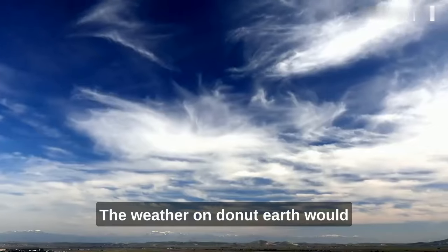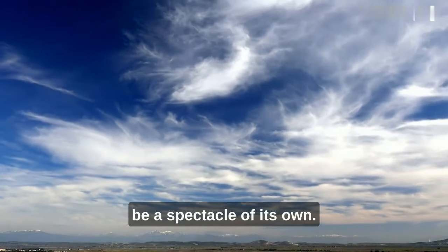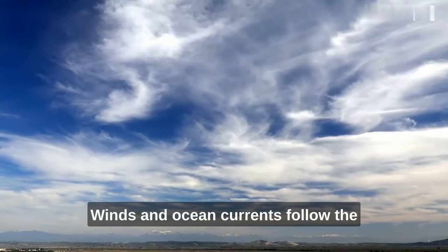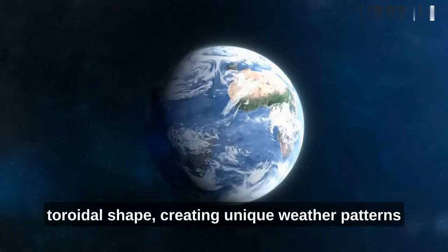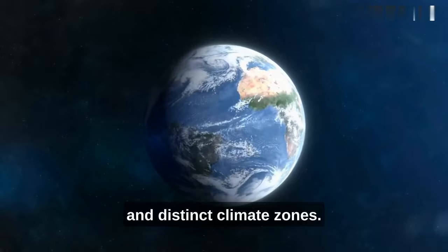But that's not all. The weather on donut Earth would be a spectacle of its own. Winds and ocean currents follow the toroidal shape, creating unique weather patterns and distinct climate zones.